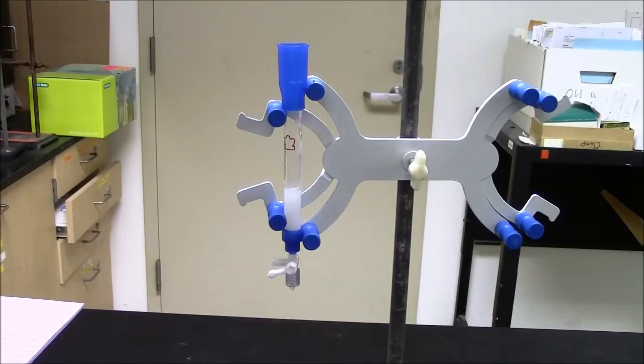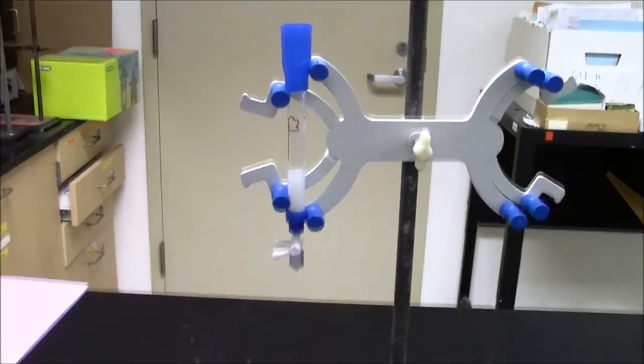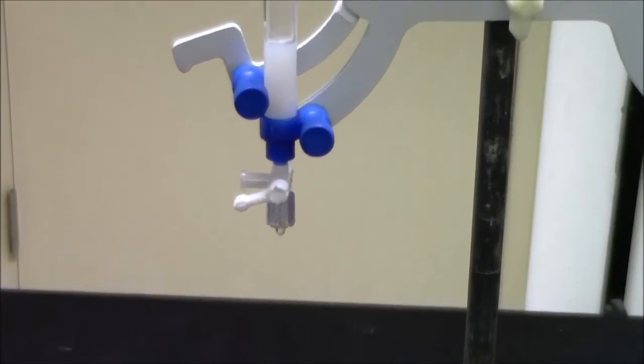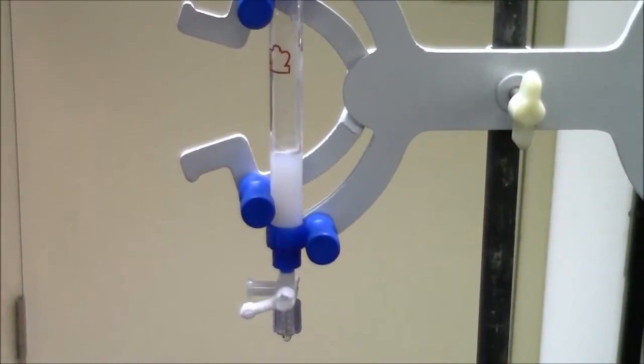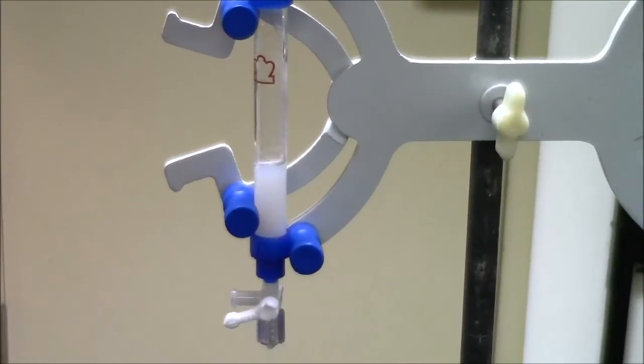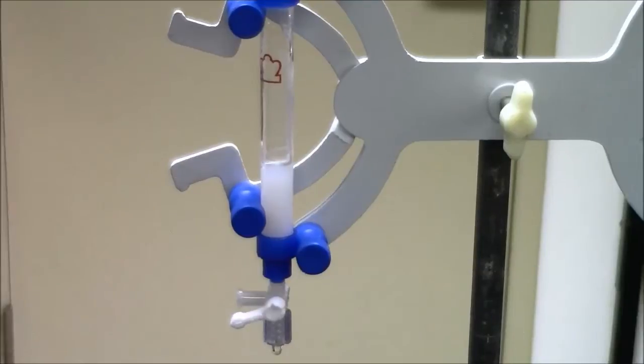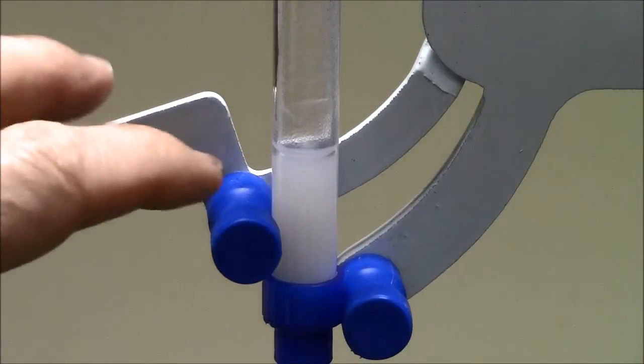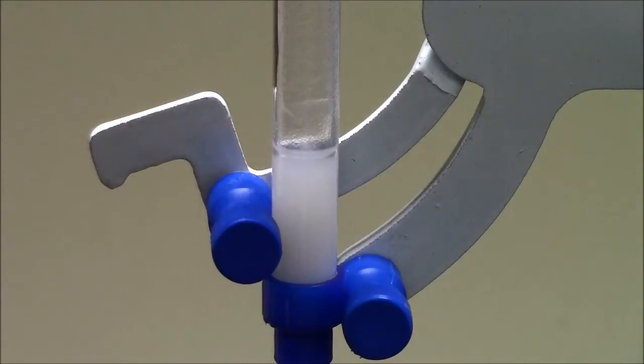So right now, material is dripping out the bottom of the stopcock, which is fine, and the gel will settle into the column. I think I'll actually turn off the stopcock now, and let the gel fully settle before I start draining it anymore.